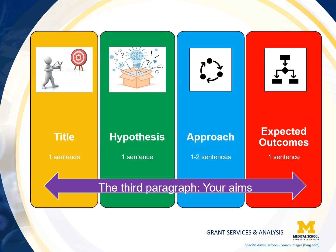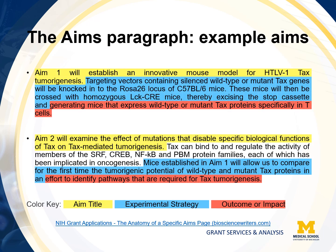In the third paragraph, your aims, start with the title — in bold type, list what you want to do. Write a brief active headline that links back to the central hypothesis. You can use one sentence for your central hypothesis, essentially how you think things work in reference to this aim. In one to two sentences, discuss your approach — how will you test this hypothesis and the method. In one sentence, discuss the expected outcomes — what are the anticipated results from this test which will confirm your hypothesis? An example of the third paragraph shows the title, followed by the experimental strategy, and finally the outcome or impact. You can find this example at the website listed below.